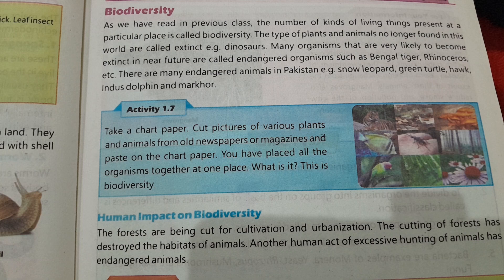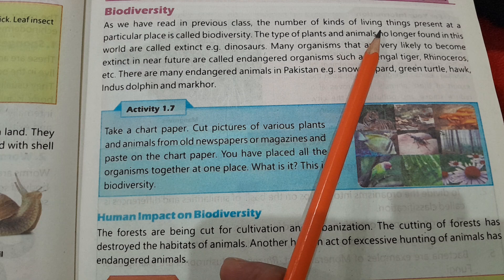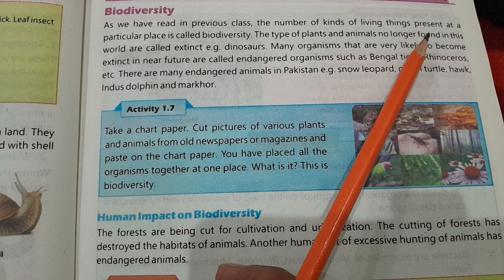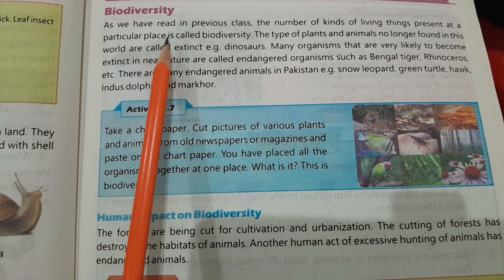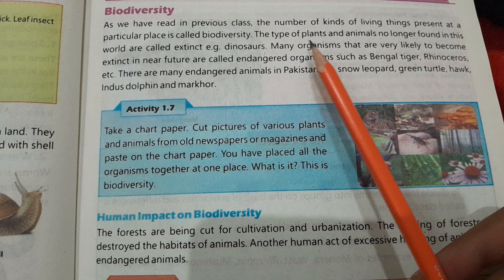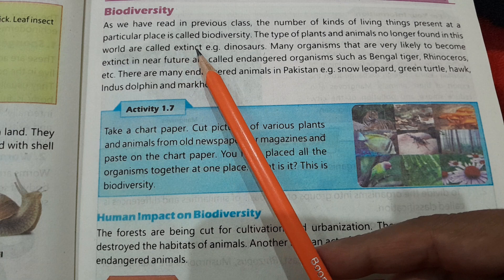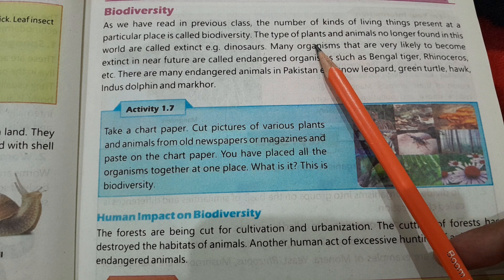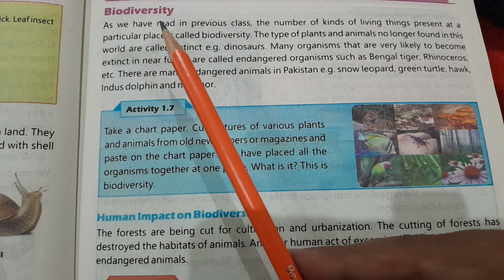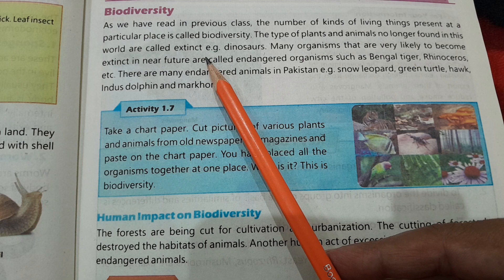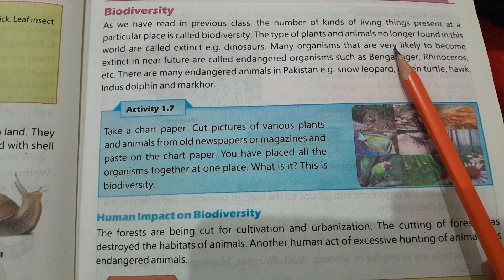Biodiversity — as we read in the previous class, the number of kinds of living things present at a particular place is called biodiversity. اس کو ہم حیاتیاتی تنوع یا biodiversity کہتے ہیں۔ The types of plants and animals no longer found in this world are called extinct — for example, dinosaurs.